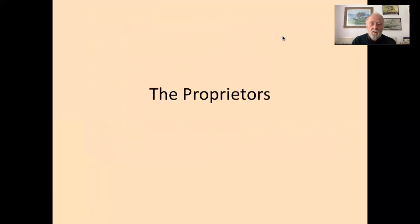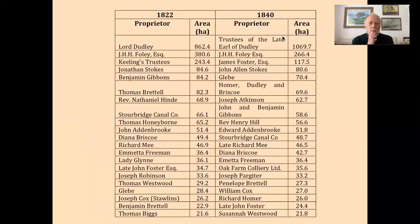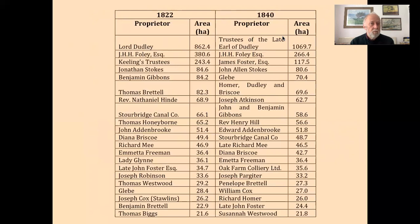Looking at what the map and book of reference tell us about the proprietors: tabulated in order of area held — expressed in hectares — in 1822 Lord Dudley was the primary landholder; by 1840 it was the trustees of the late Earl. The second most important landholder was J.A.H. Foley. The very large proportion held by the Earl of Dudley reflects his position as the ancient lord of the manor and the substantial allocations he received at the enclosures.